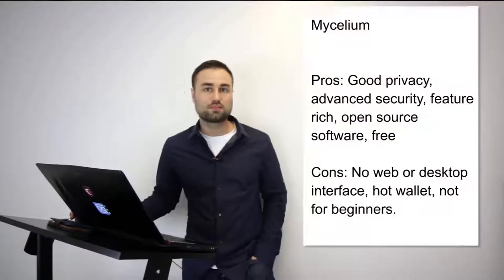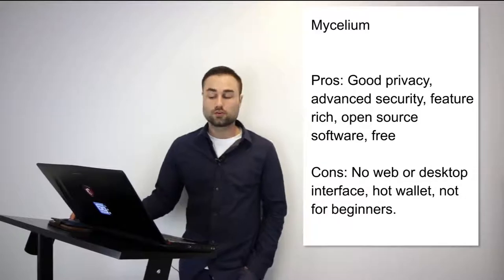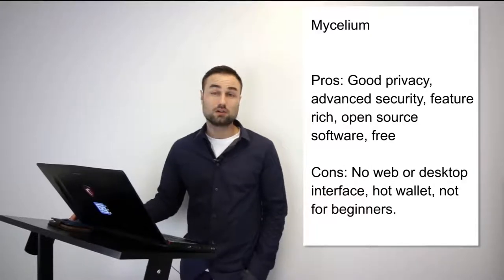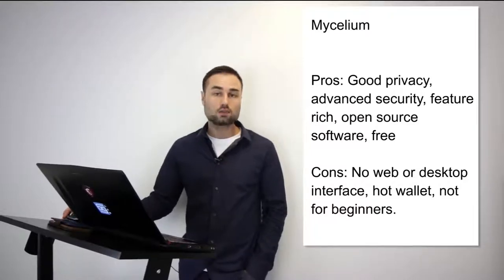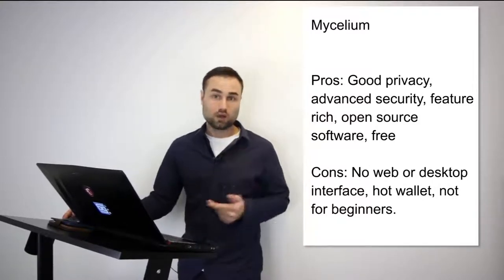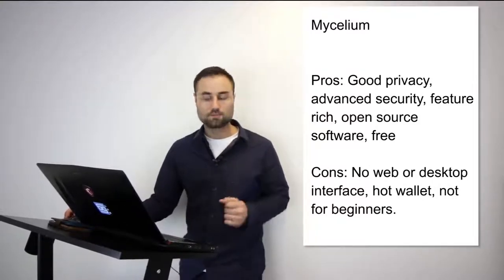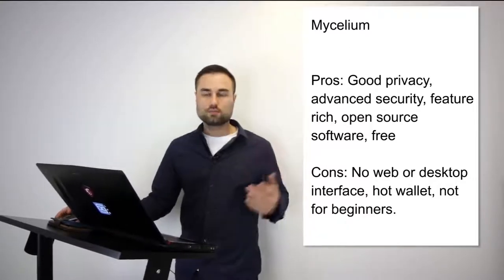Number two is Mycelium — a more advanced option. Currently it's only for Bitcoin, but they do have plans for multi-currency support; Ethereum is next along with some tokens. It's available for both Android and iPhone. What's really good is great privacy and advanced security, including multi-signature security where you need multiple touch points. It's open source and free. The cons: no web or desktop interface, it is a hot wallet, and it's not the best for beginners. It's not my go-to wallet, but the user interface is really good.